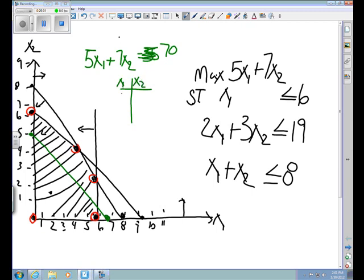But x1 is 0, 7 times something equals 70. That would be 10. If x2 is 0, 5 times 14 equals 70. So I get a new set of coordinates.